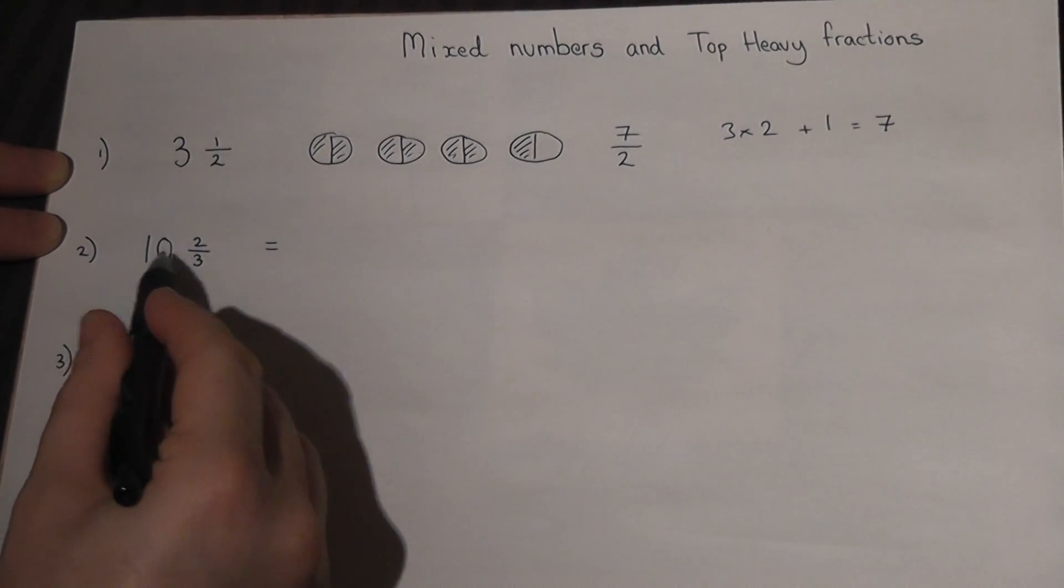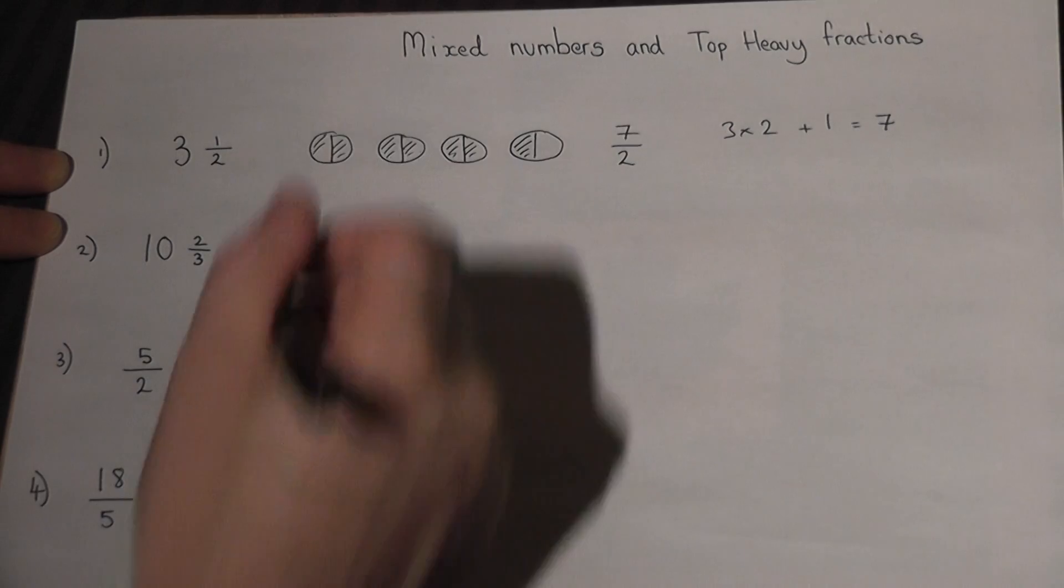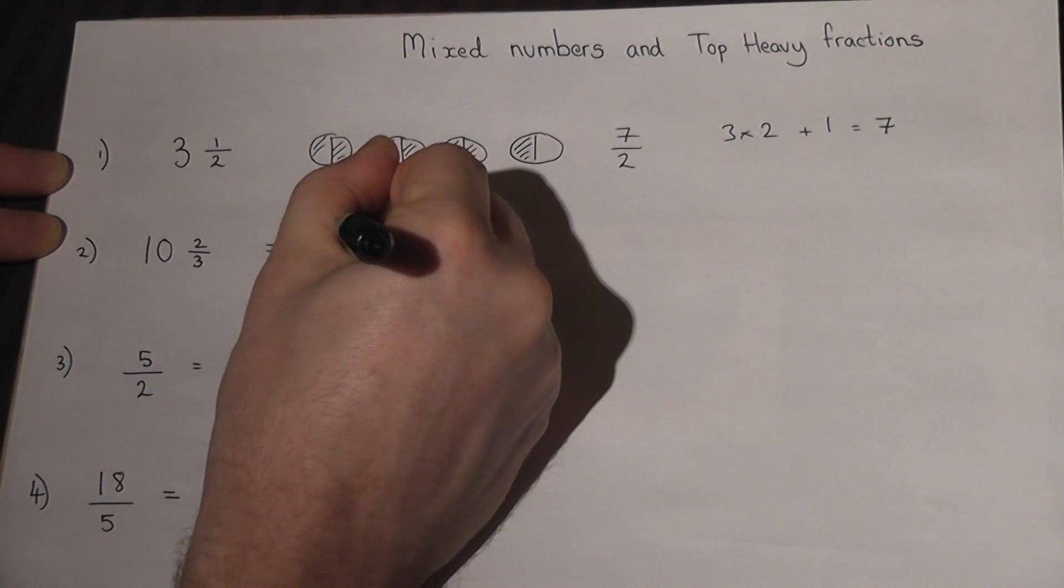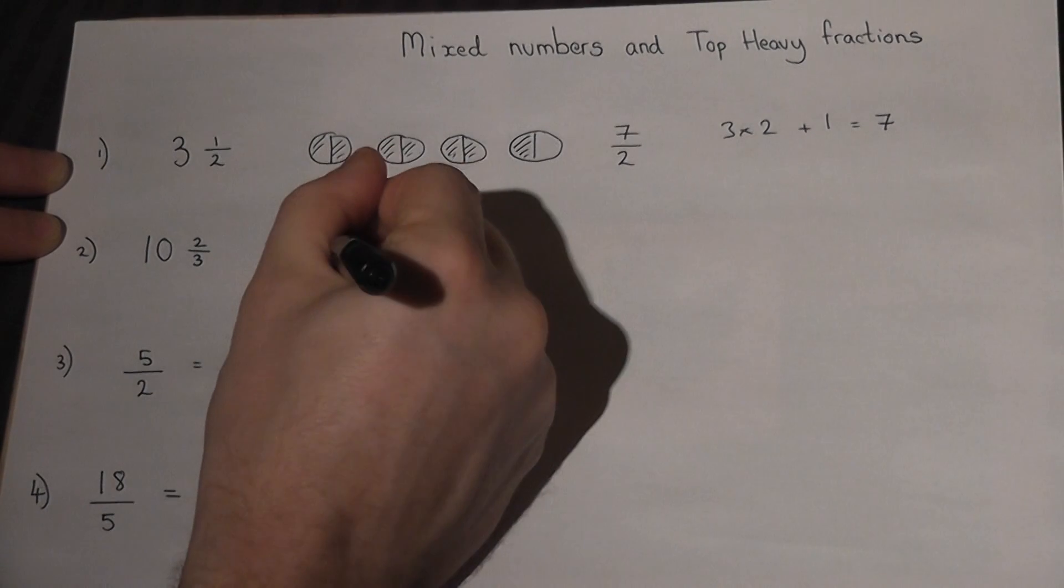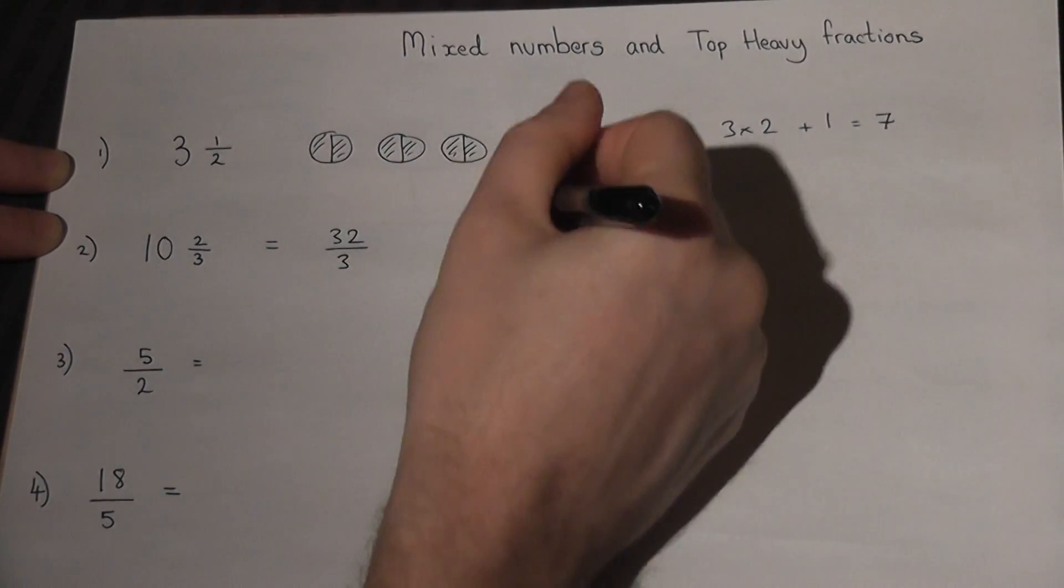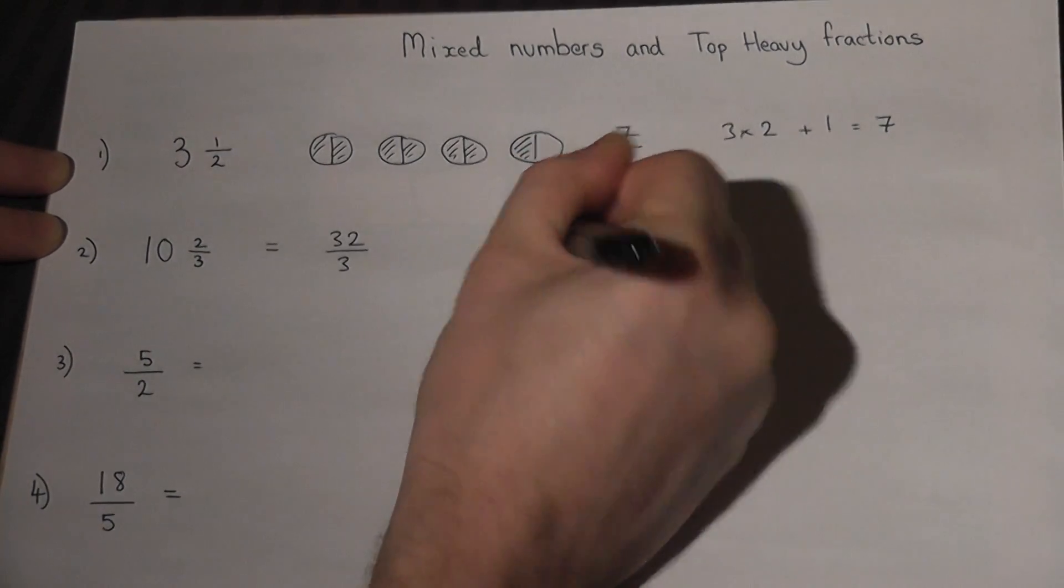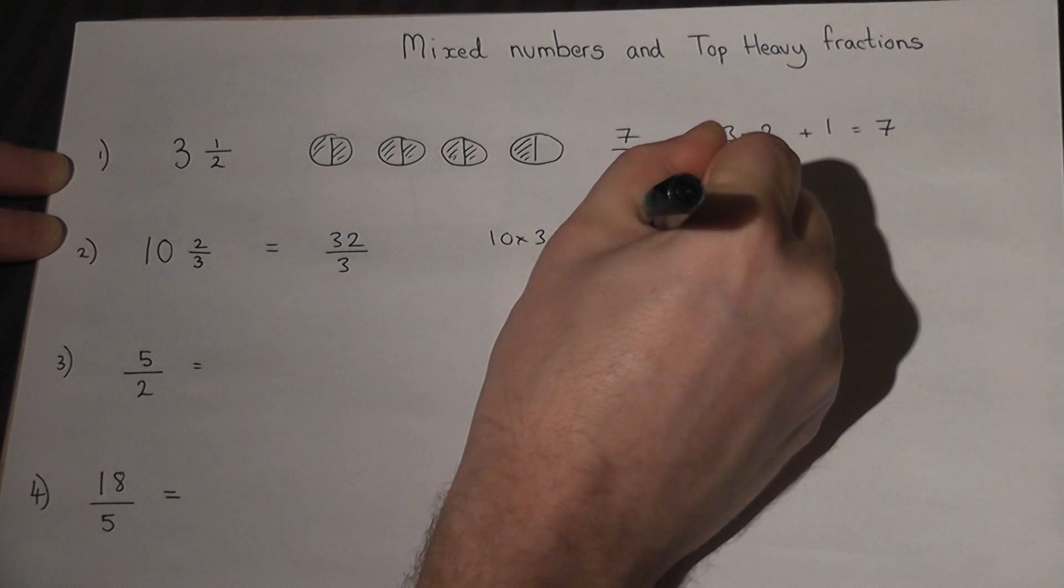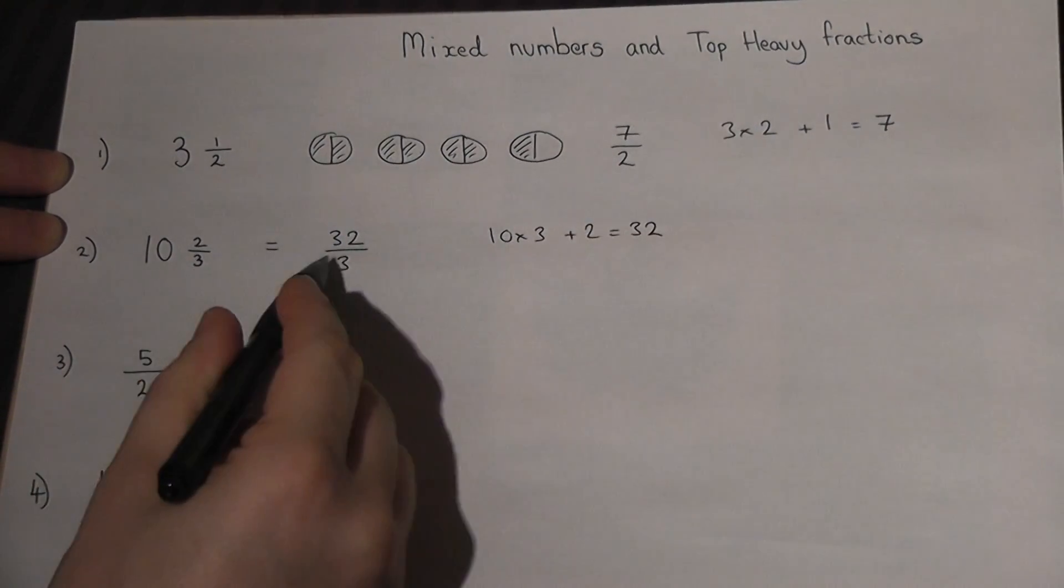So in this one, ten times three is thirty, plus the two is thirty-two, so it's thirty-two over three. So again, to get the top we do ten times three is thirty, add the two to get thirty-two, and the bottom stays the same.